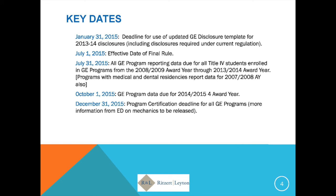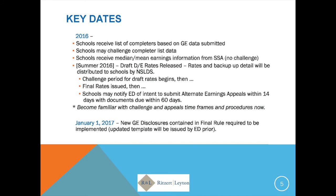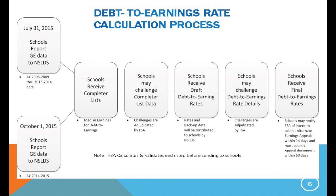See backup information for detail on how the draft rate was determined. There will be a period of time for an institution to challenge the draft rate. Once that expires and once final rates are issued, there is a further opportunity to file an appeal based upon an alternate earnings survey, with required documentation. In January 2017, there will be new disclosure requirements imposed that are in the final rule but don't take effect until then.